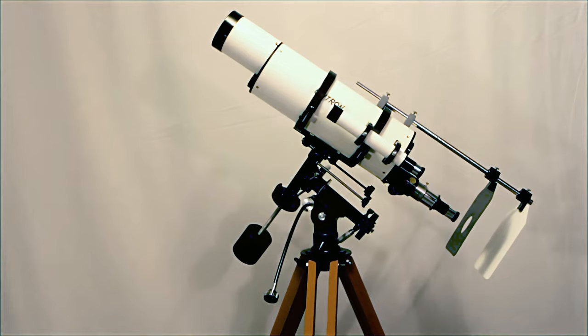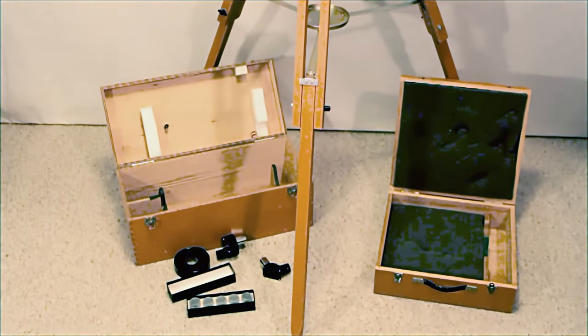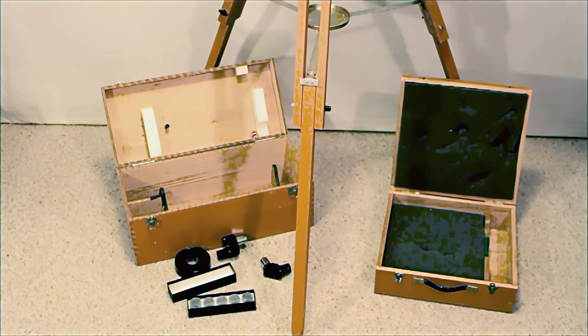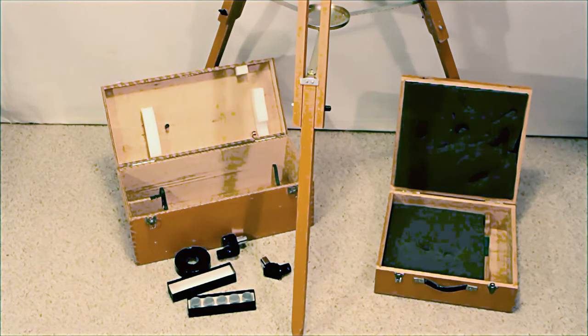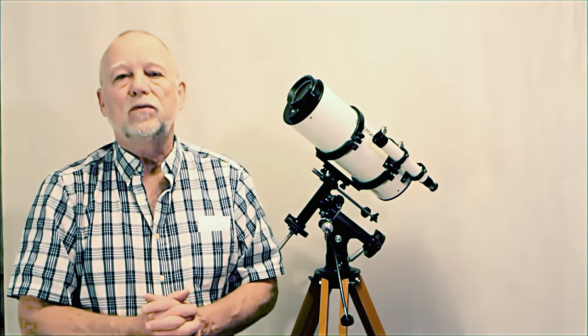Just like with all Unitrons, the boxes and cases are very important. You'll notice that the boxes for the Unitron 131C are small and compact, quite different from a typical box for a longer refractor telescope. I hope you've enjoyed my little tour of the Unitron 131C. Thank you.